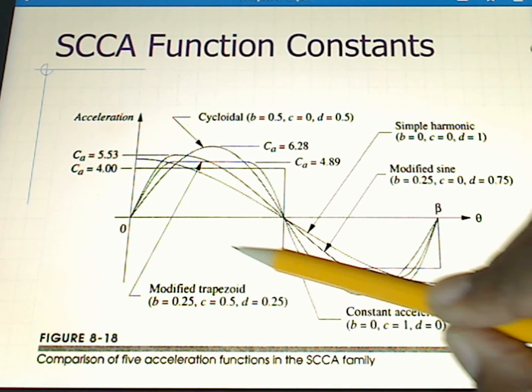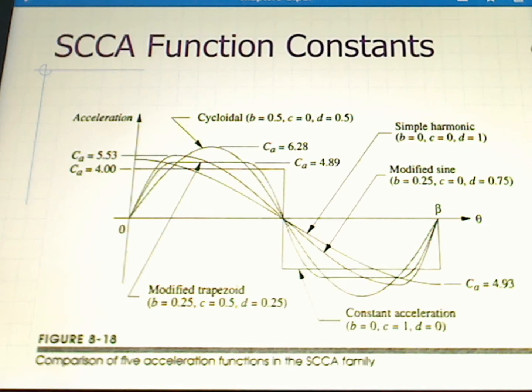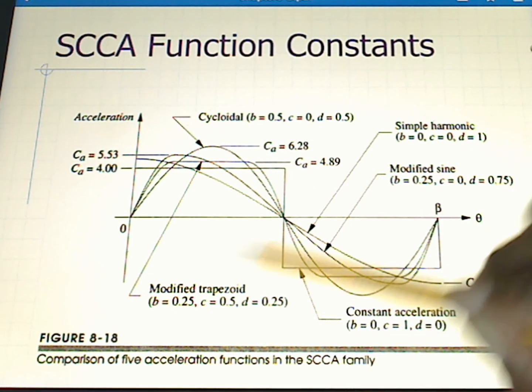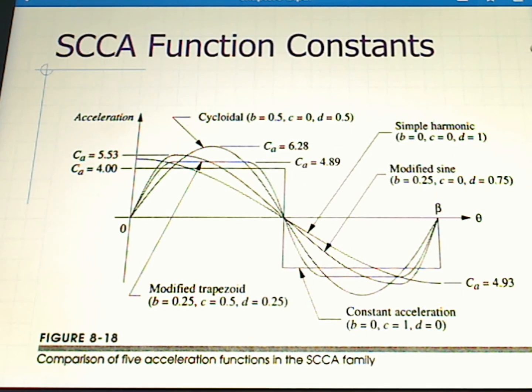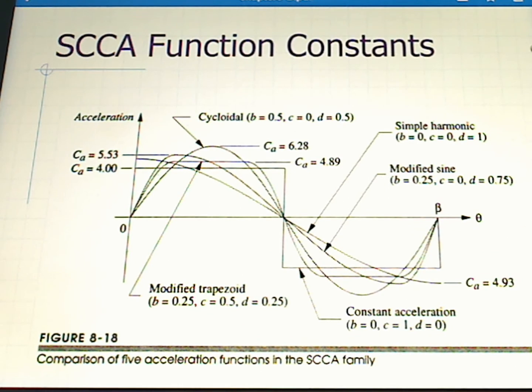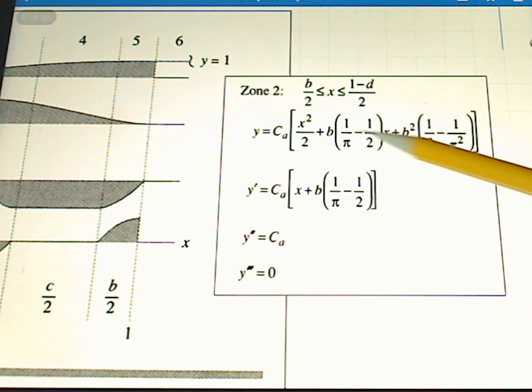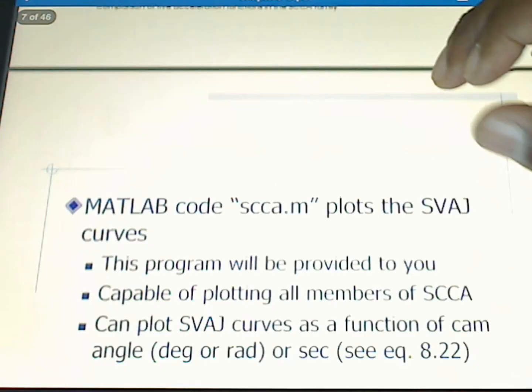That will plot the modified trapezoid function for the acceleration, position, velocity, and jerk. If instead we wanted to use the cycloidal function, we would change from B equals 0.25 to B equals 0.5, from C equals 0.5 to C equals 0, and so on. That makes this a powerful function. The SCCA family is powerful because we can simply change from one function to another just by changing the variables. We can have one program where we use zone functions, and then we just simply have to change these variables and we'll be plotting a different curve in this family.